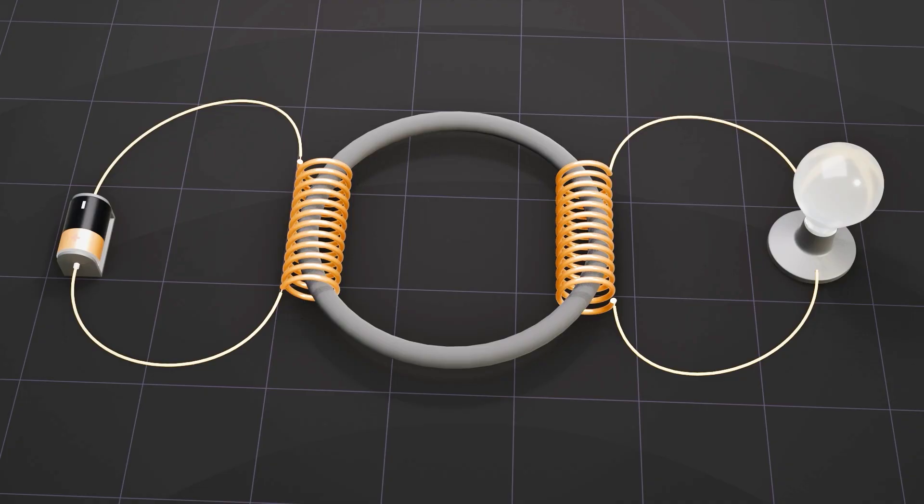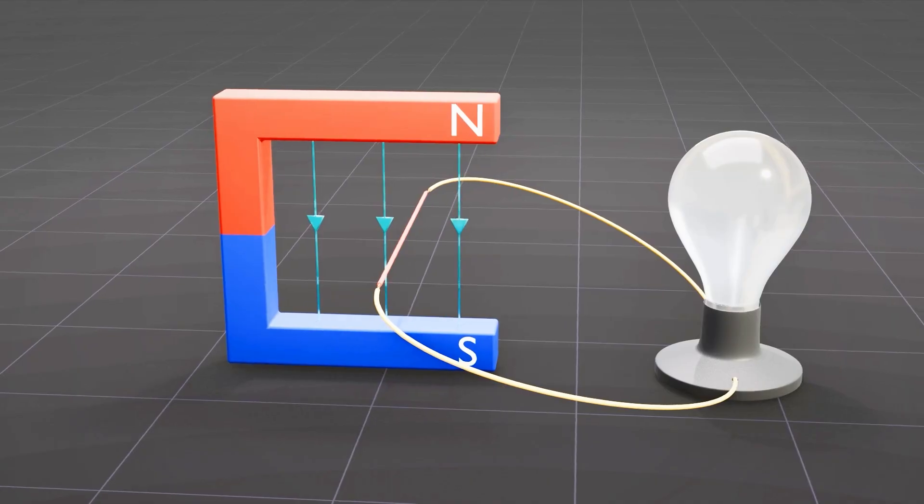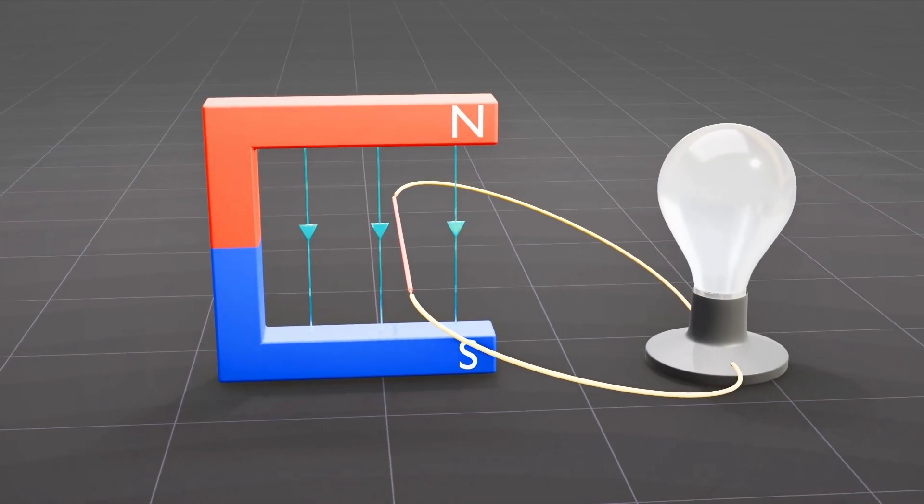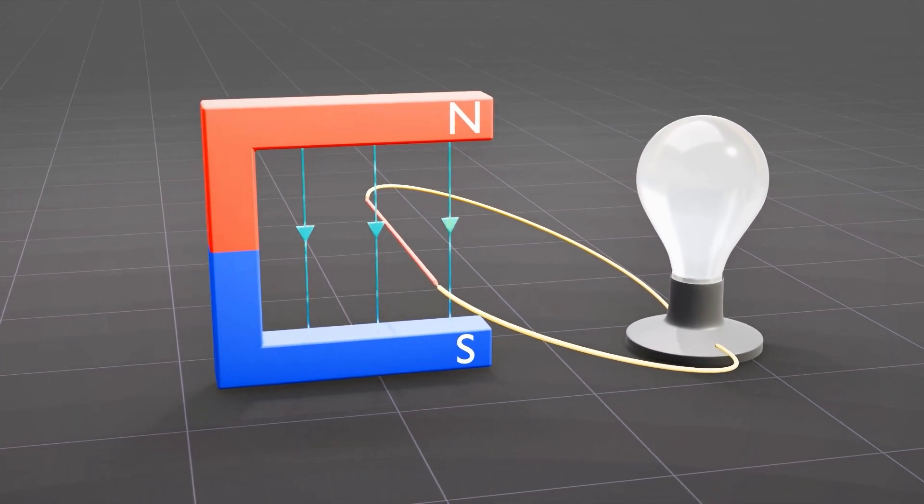This experiment demonstrates that a magnet can induce an electric current in a wire only if there's a change in the magnetic field. Let's examine an alternative scenario in which a wire can experience a change in the magnetic field.